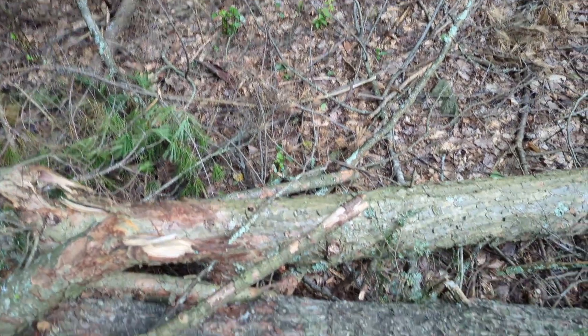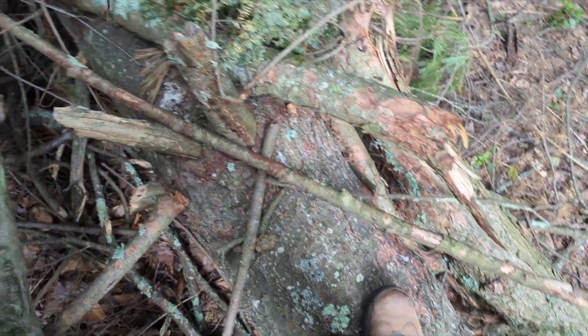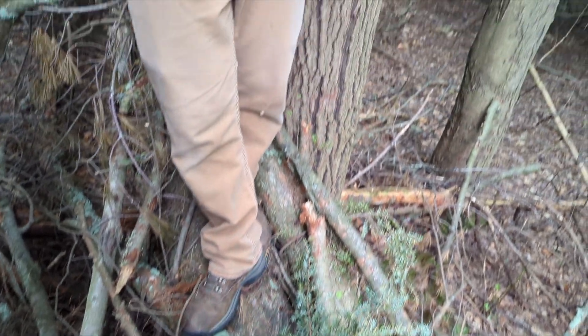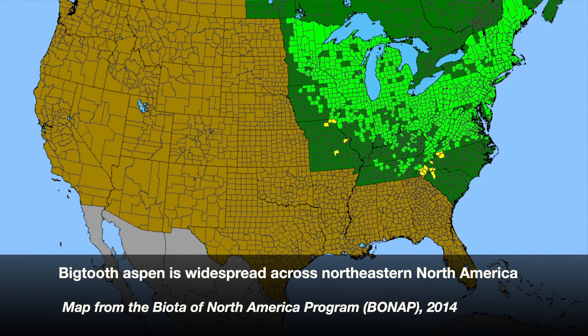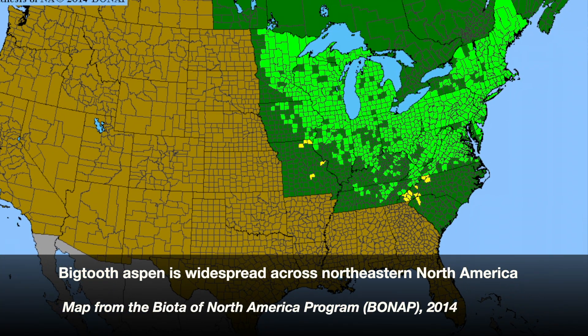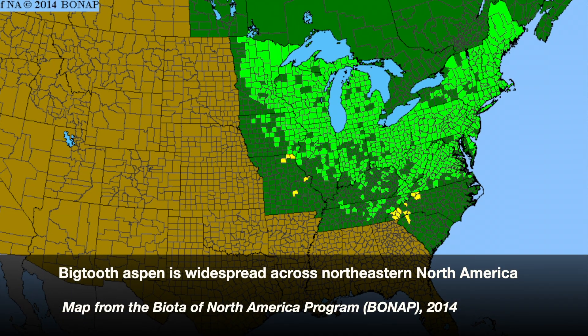Bigtooth aspen is really only found in eastern forests. It goes down into the mid-Atlantic — I've seen a few in North Carolina, which I think is about the southern end of its range — and it goes up into Maine. It's really heavy around the Great Lakes states where it's very abundant. So it's really an eastern forest species, compared to quaking aspen which covers a huge range of habitats across the continent. There you have it — bigtooth aspen, another really awesome aspen species you'll probably see more frequently in our eastern forests than quaking aspen.